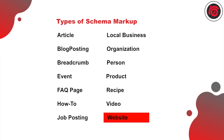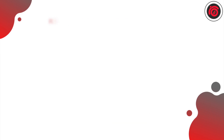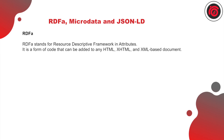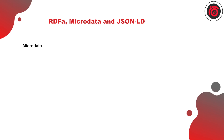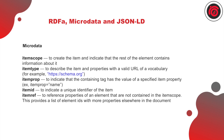Now let us understand what RDFA, microdata, and JSON-LD are, because these three are the key aspects of coding any schema. RDFA stands for Resource Descriptive Framework in Attributes and is a form of code that can be added to HTML, XHTML, or XML-based documents. It contains various data types. Microdata is a level above RDFA and comprises many item properties that you can specify in detail.